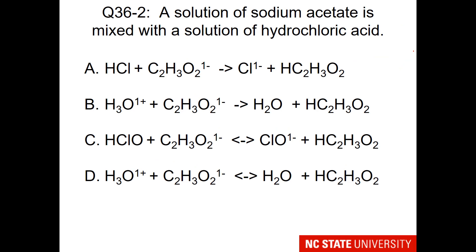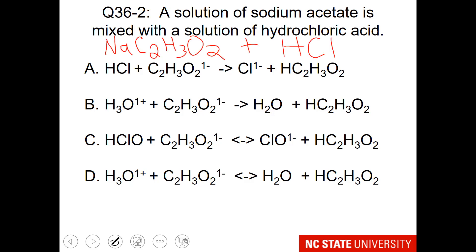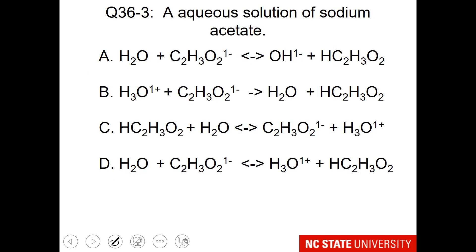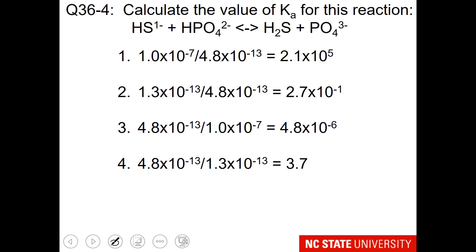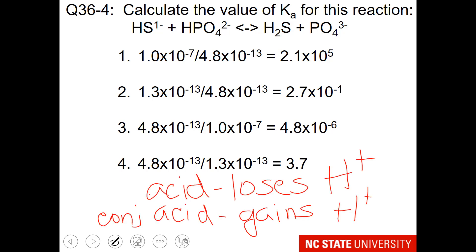Here's another one: sodium acetate is mixed with hydrochloric acid, both in aqueous solution. Keep in mind that hydrochloric acid is a strong acid in aqueous solution. Also consider: what species are present in an aqueous solution of sodium acetate? Finally, calculate the value of Ka for this reaction. You'll need to decide which one is the acid and which is the base, remembering that the reacting acid loses a proton and the produced conjugate acid gains a proton.